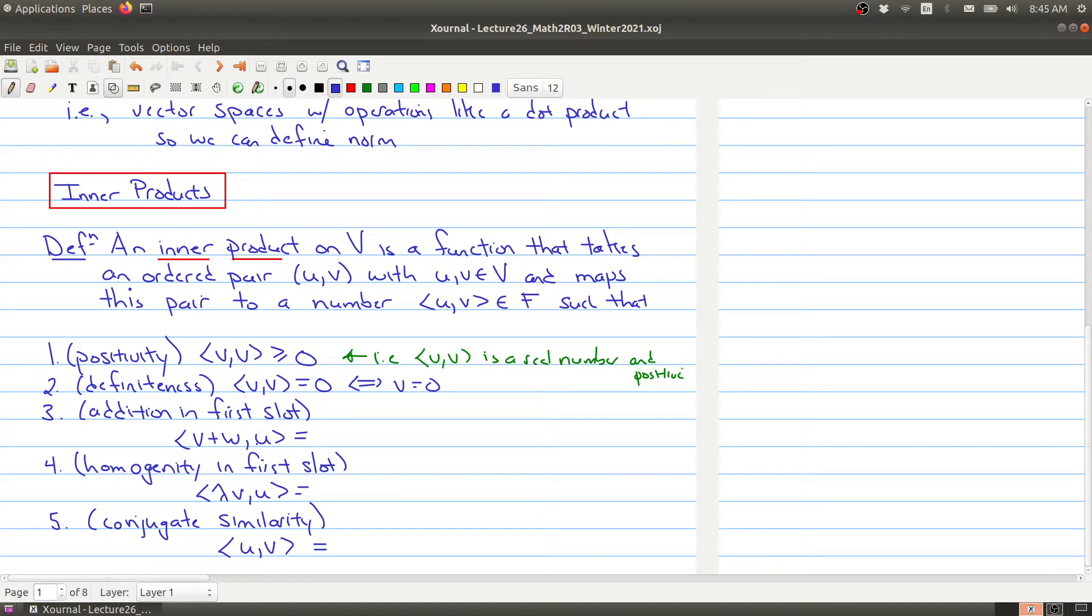So we have addition in the first slot, which means that if we take v plus w comma u, it's the same thing as taking the inner product of v and u plus the inner product of w and u. So we have this property in the first coordinate. We have homogeneity in the first slot, which is similar, that we can pull out scalars from the first slot.